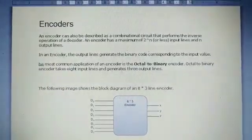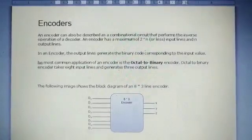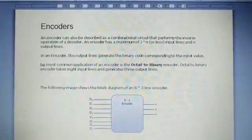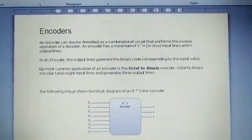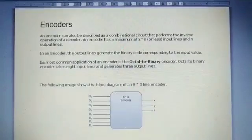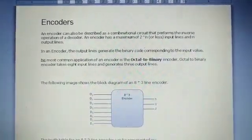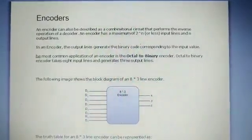An encoder is a digital circuit that performs the inverse operation of a decoder. The opposite of the decoding process is called encoding. An encoder is a combinational logic circuit that converts an active input signal into a coded output signal.